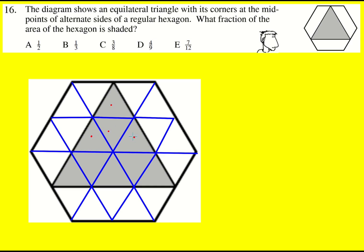So I've got one, two, three, four, five, six, seven, eight, nine shaded triangles,